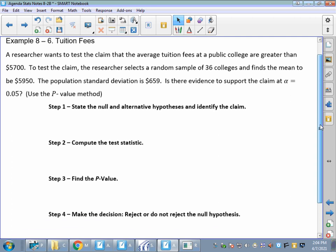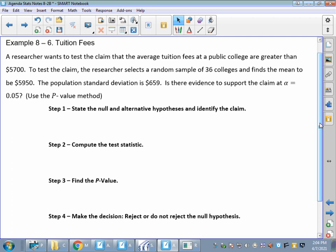Example 8-6, tuition fees. A researcher wants to test the claim that the average tuition fees at a public college are greater than $5,700. This is just tuition, not room and board. To test the claim, the researcher selects a random sample of 36 colleges and finds the mean to be $5,950. Population standard deviation is 659, so I know that this is my sigma. Is there evidence to support the claim at alpha equals 0.05? Use the p-value method.